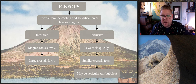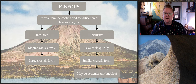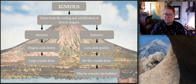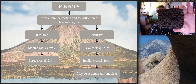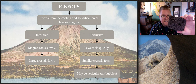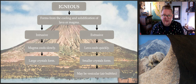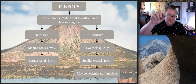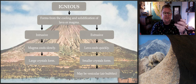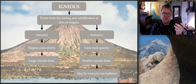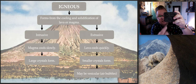Extrusive rocks cool quickly, so smaller crystals form. It's also possible they are vesicular, meaning they have air bubbles. This is an example of basalt — an extrusive rock. I cannot see crystals with the naked eye; I'd need a 10x magnifying lens to find any small crystals hidden within. This cooled very quickly, so the crystalline structure is very small. We would call this vesicular basalt because it has trapped air bubbles.